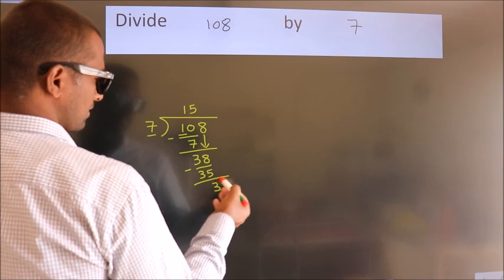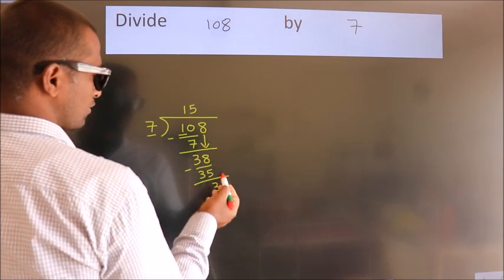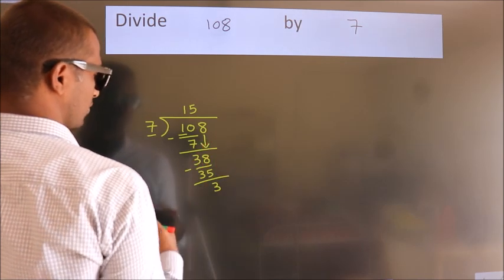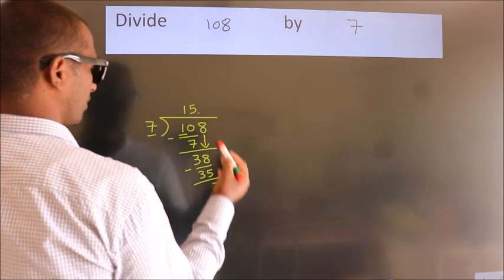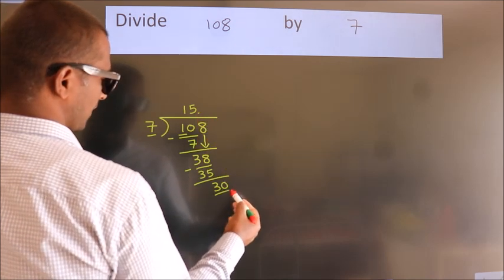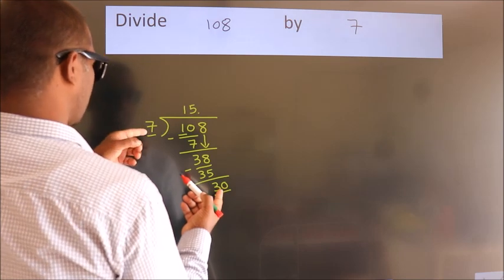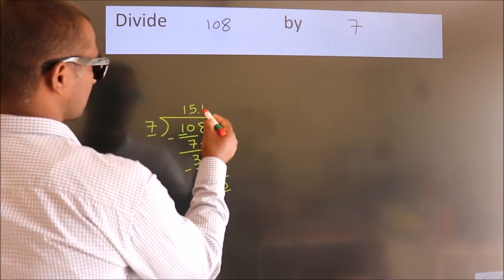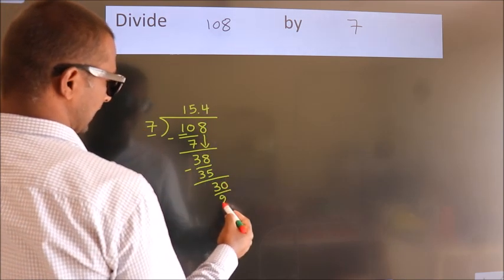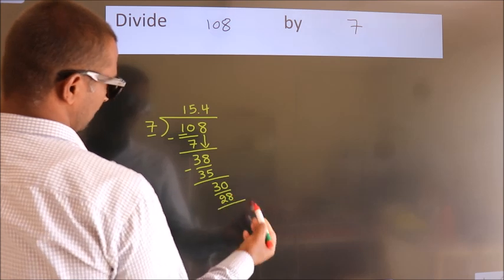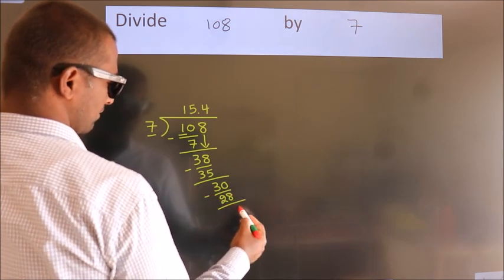After this, no more numbers to bring down. So what we do is, we put a dot and take 0. So 30. A number close to 30 in the 7 table is 7 fours, which is 28. Now we subtract. We get 2.